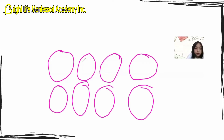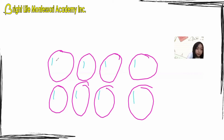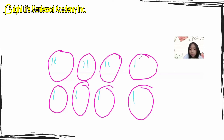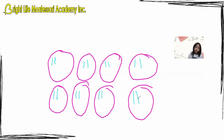Now I am going to put one stick in each circle until it reaches sixteen — one, two, three, four, five, six, seven, eight. We are going to add one more because it is not sixteen yet: nine, ten, eleven, twelve, thirteen, fourteen, fifteen, sixteen. As you can see, all the circles have two sticks each. That means sixteen divided by eight equals two.